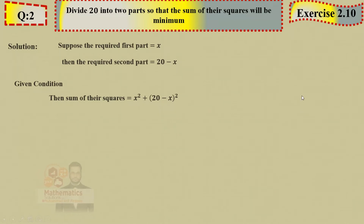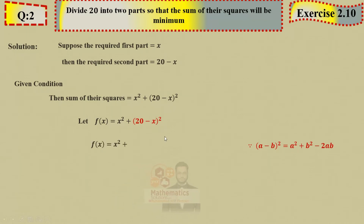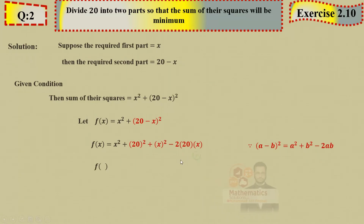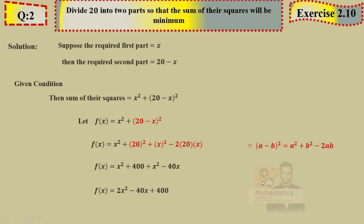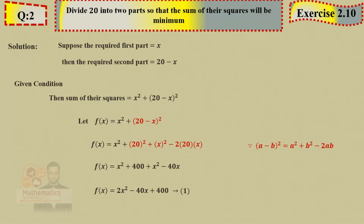Expand (20 − x)² using the formula (a−b)² = a² − 2ab + b², where a = 20, b = x. This gives: 20² + x² − 2(20)(x) = 400 + x² − 40x. Simplifying: S = 2x² − 40x + 400. This is our function after decoding. Now we must check that this is a relative minimum using the second derivative test.